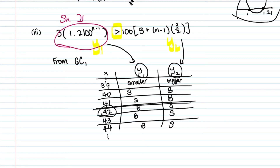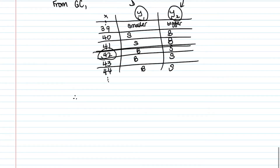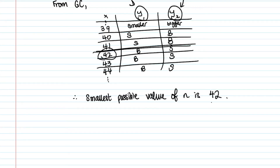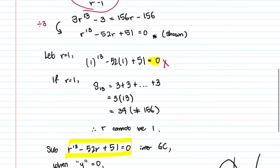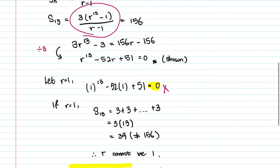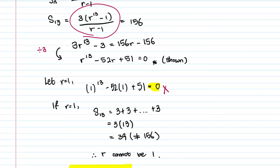From n=42 onwards, the GP term is larger than 100 times the AP term. That is where the geometric progression curve first exceeds 100 times the arithmetic progression. Since the question asks for the smallest possible value of n, the answer is n=42.